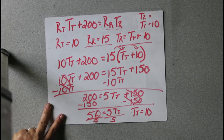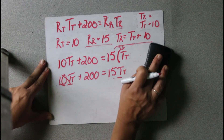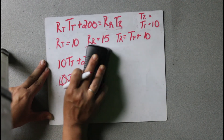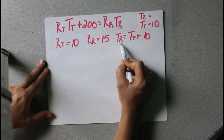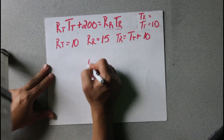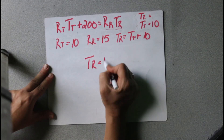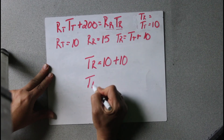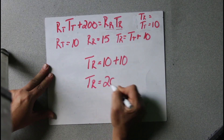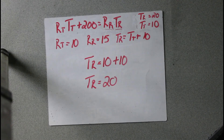We're not done yet — we still have to find TR. We found TT, and it equals 10. Right here it tells us that TR equals TT plus 10. So if TR equals TT, which is 10, plus 10, we know that TR equals 20. Hope you got those right — if you have any problems, just shoot me a message and I can make another video for you.